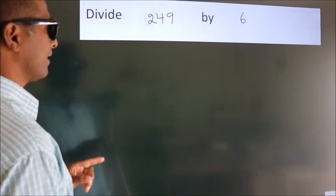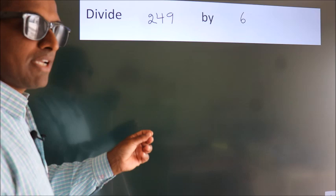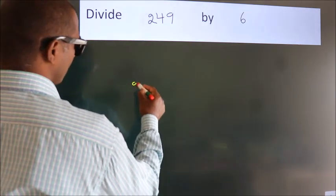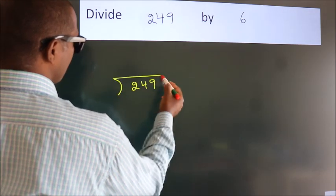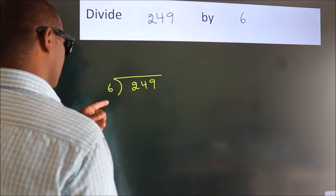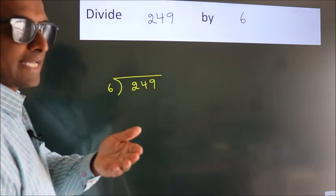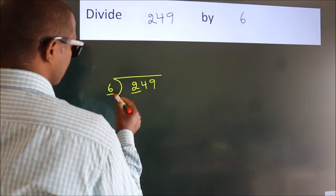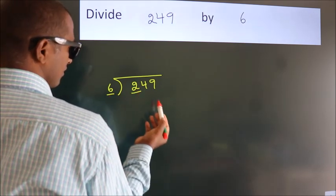Divide 249 by 6. To do this division we should frame it in this way: 249 here, 6 here. This is your step 1. Next here we have 2. 2 smaller than 6, so we should take two numbers: 24.